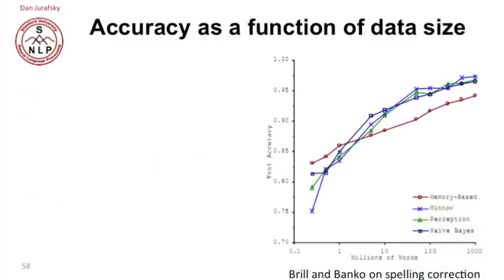If you have a very huge amount of data, it may turn out that the classifier may not matter. Here's a result from Brill and Banko on spelling correction, comparing the performance of four different machine learning algorithms: a memory-based learner, Winnow, a perceptron, and Naive Bayes, on a spelling correction task with a million words, ten million words, a hundred million, and so on on a log scale.